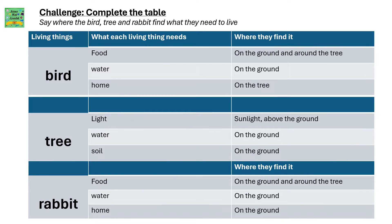Complete the table below. Say where the bird, tree, and rabbit find what they need to live. A bird needs food, water, and a home to survive. It can find food on the ground and around the trees. It can find water on the ground, and it can find a home in a tree.